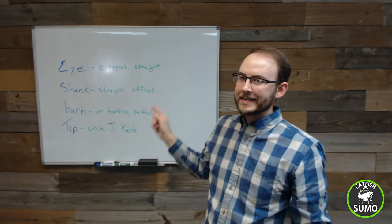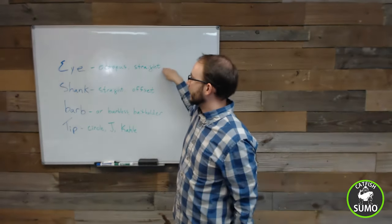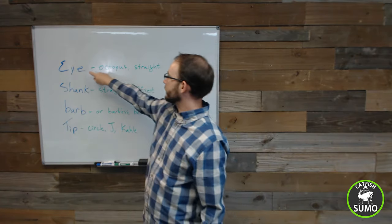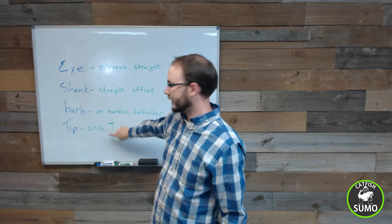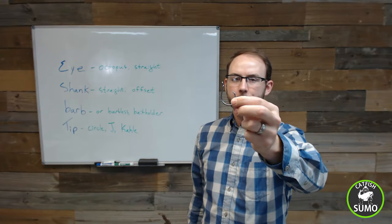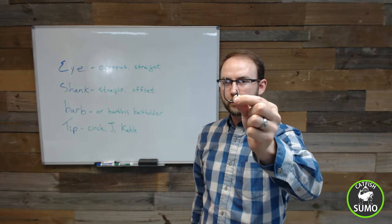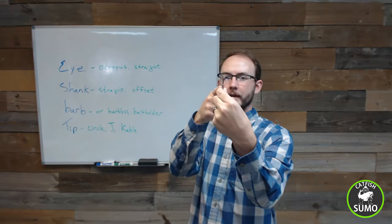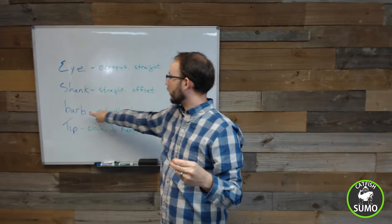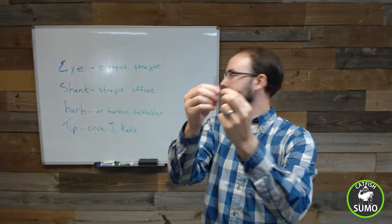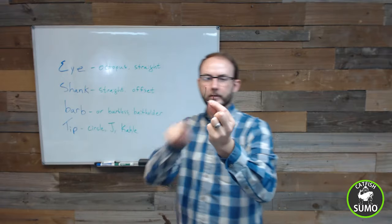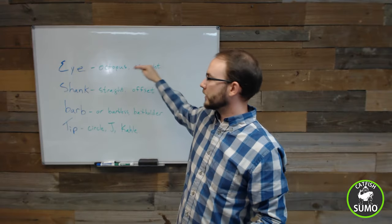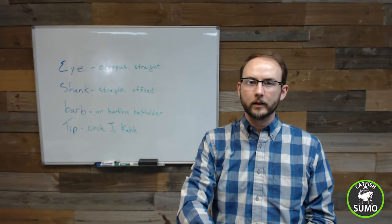So those are the terms related to the anatomy of the hook. Now let's go through and you can understand how there can be one of these terms for every style of hook. So there would be a term referring to the eye, the shank, the barb, and the tip. For example, here is the Catfish Sumo Heavyweight Octopus Circle Hooks. So this is an octopus eye. It has an offset shank. Remember, the tip is pointing to the side. It is barbed because there's a barb right down here underneath the tip. And it is a circle-style tip. So the circle is pointing right back in towards the shank.